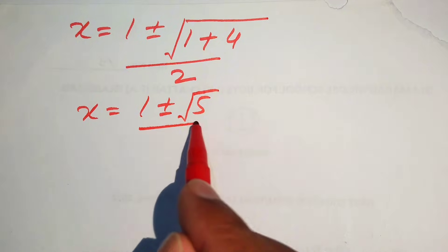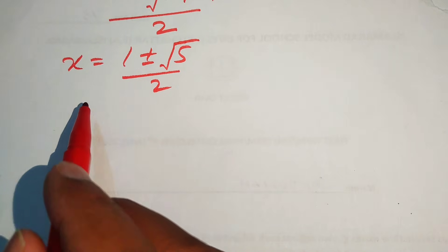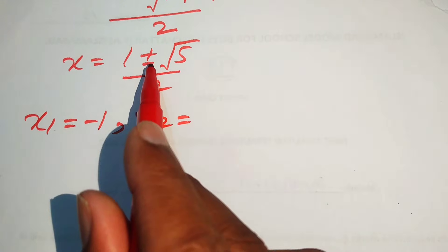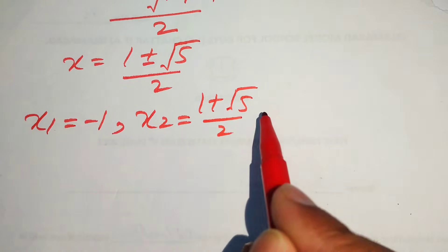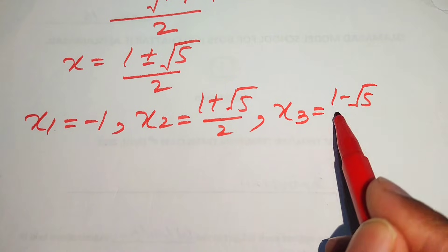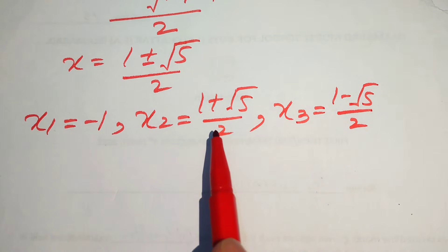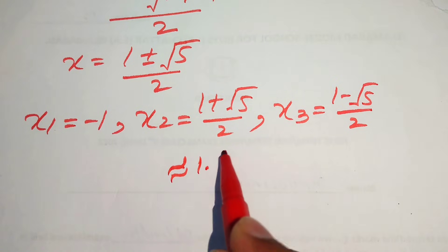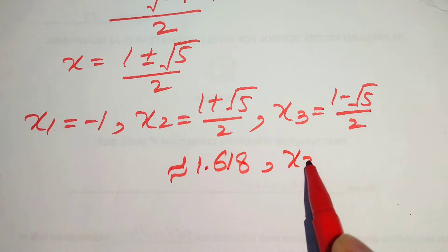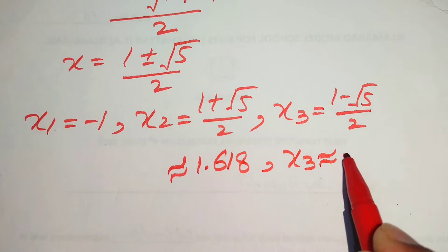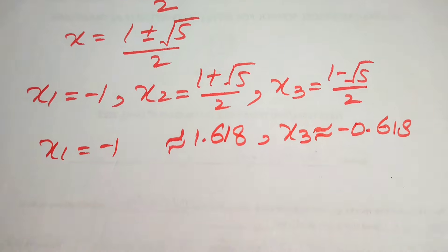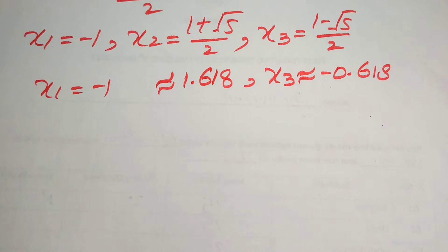Simplifying the terms gives the other two roots as 1 plus or minus the square root of 5, divided by 2. The three roots of the given equation are: x1 equals minus 1, x2 equals 1 plus the square root of 5 divided by 2, and x3 equals 1 minus the square root of 5 divided by 2. In decimal form, x2 is approximately 1.618 and x3 is approximately minus 0.618.